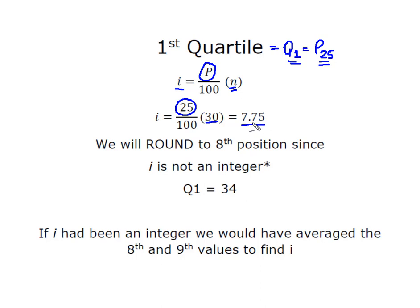Under this particular approach for finding quartiles, I'm simply going to take that 7.75 round up to the 8th position. And when I start at the top and I count down, I know that the value that falls in the 8th position is 34.